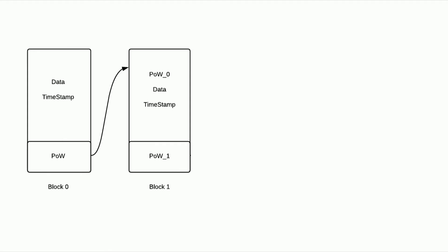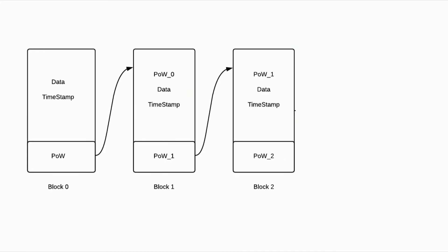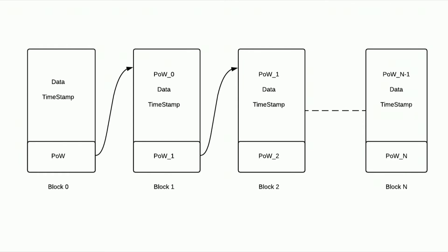The next transaction might be someone buying a car. The second transaction, someone buying a house. So the second transaction will also have data, a timestamp when it was recorded, and the previous proof of work recorded in the previous block. And this goes for the rest of the blocks that are stored.